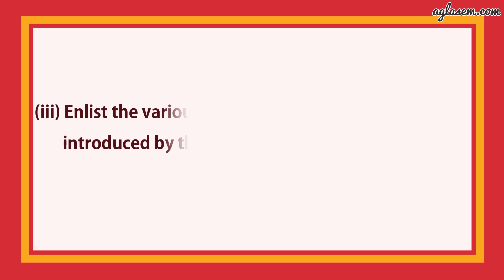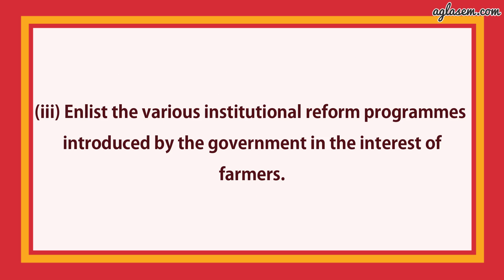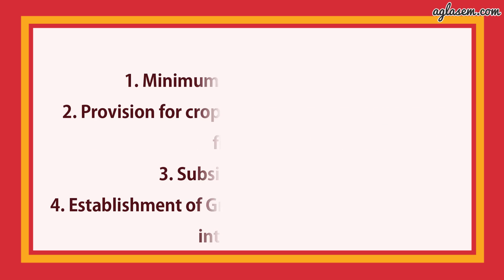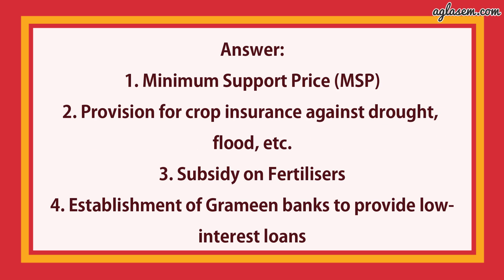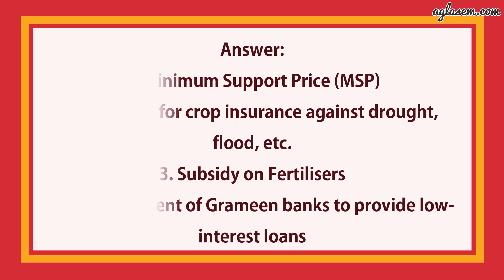Third part: enlist the various institutional reform programs introduced by the government in the interest of farmers. Answer: minimum support price (MSP); provision for crop insurance against drought, flood, etc.; subsidy on fertilizers; and establishment of grameen banks to provide low-interest loans.